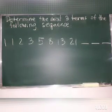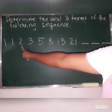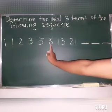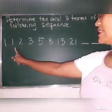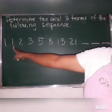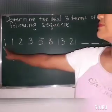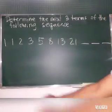So, determine the next 3 terms of the following sequence. We have here 1, 1, 2, 3, 5, 8, 13, and 21. So, first, again, we're going to subtract the given numbers from the second term and the first term.